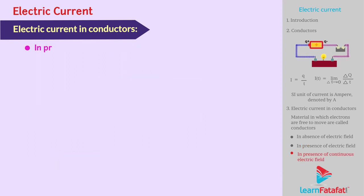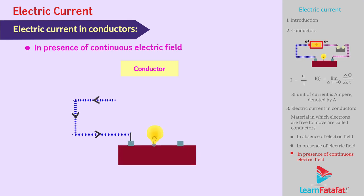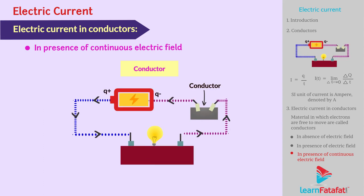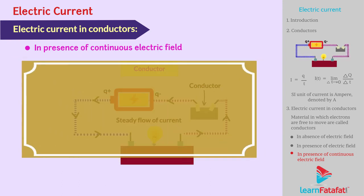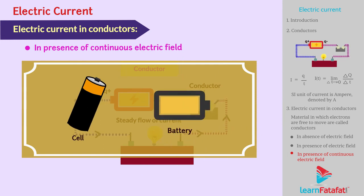In presence of continuous electric field. In this case, charges are supplied and electrons are moving continuously inside the conductor. Hence, there is a steady flow of current in the conductor. Therefore, there will be continuous flow of current. This type of mechanism is seen in cells or batteries that maintain steady flow of current.